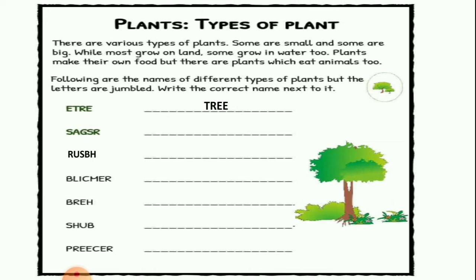Next is S-A-G-S-R. You can find this everywhere around your houses — it starts growing automatically. We don't need to take care of it, and it grows when there is a lot of rain in the rainy season. Can you guess what the answer is? It is grass. Grass grows anywhere around your houses, trees and so on. Write down G-R-A-S-S.